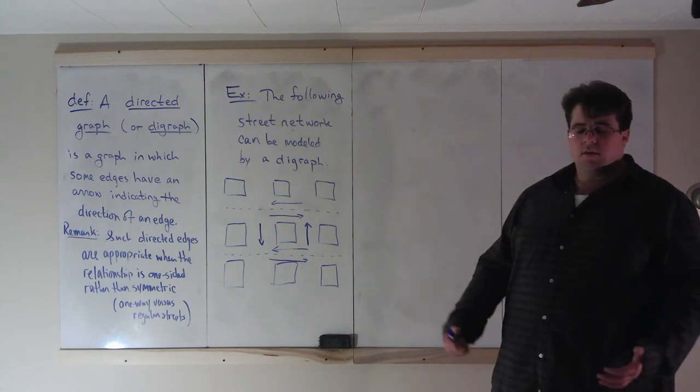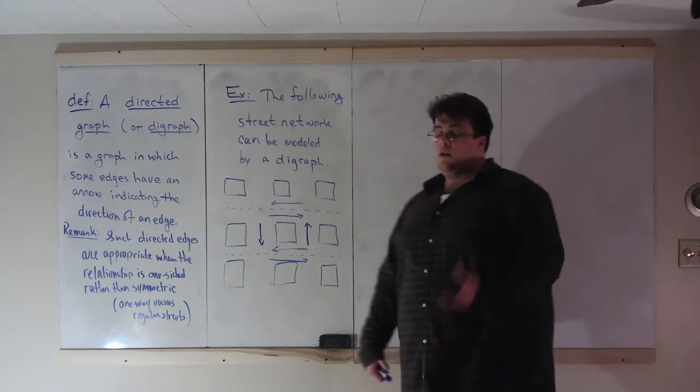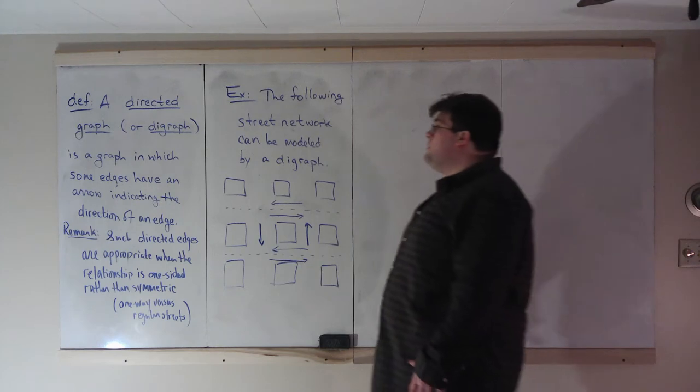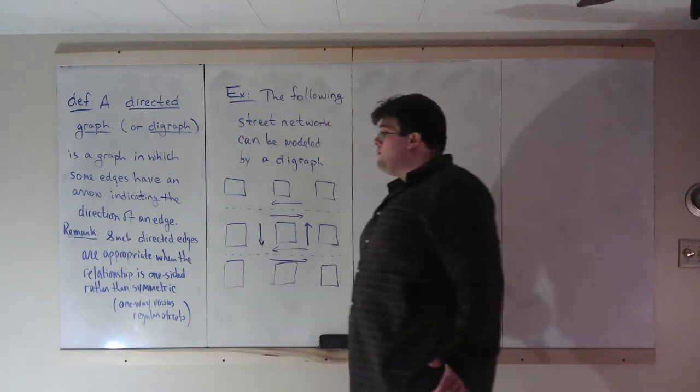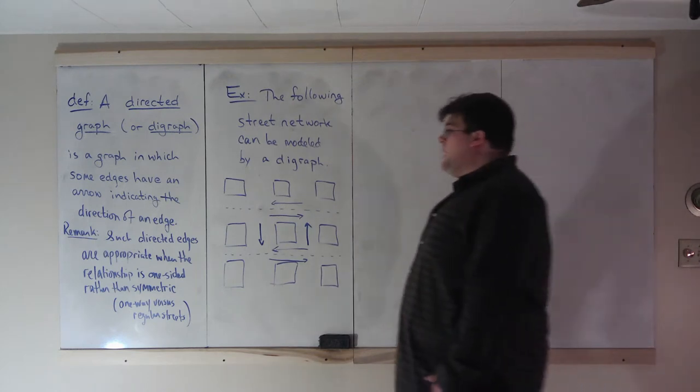So last week we discussed regular graphs, which had vertices and edges. But here, on a directed graph, we're also going to add arrows to some edges, possibly all edges.